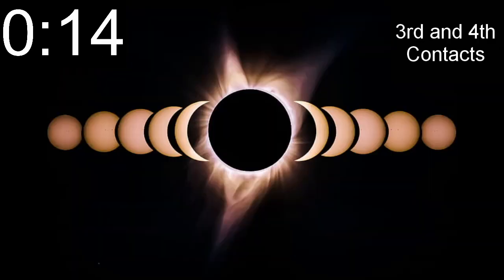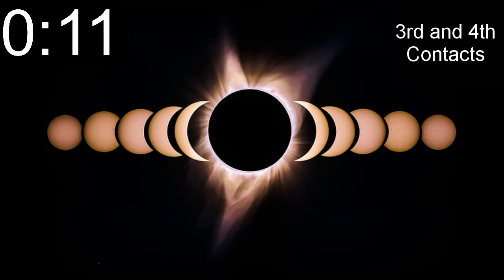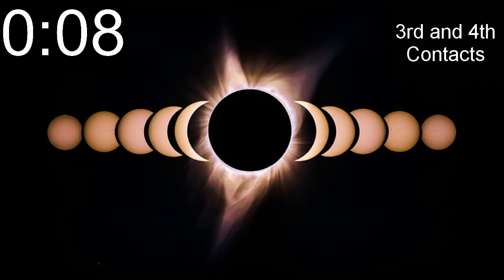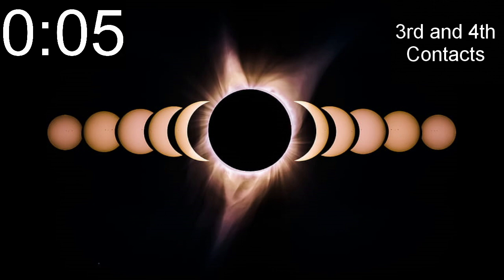Once the sun reappears, the descending steps of the eclipse — third and fourth contact — will resemble the first two steps, but as the moon moves away from the sun rather than toward it. And that's what happens during a total solar eclipse.